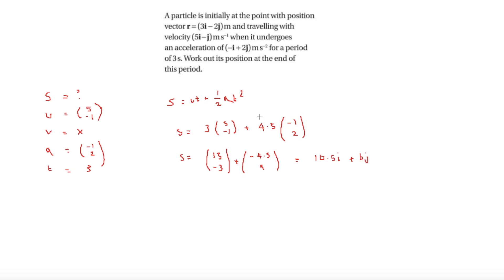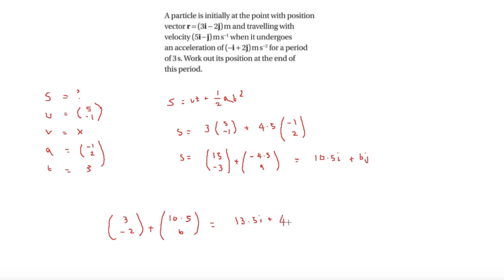But that isn't our final answer — that is the displacement from its initial position. The question asks for its position at the end of the period. Since it starts at 3, minus 2, we add that to the displacement 10.5, 6. So the final answer is 13.5i plus 4j, in meters.